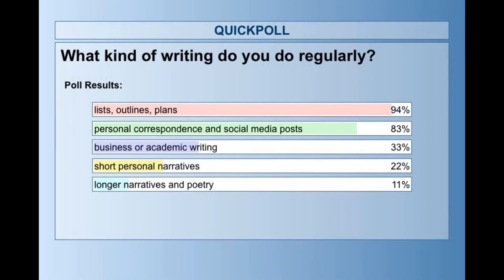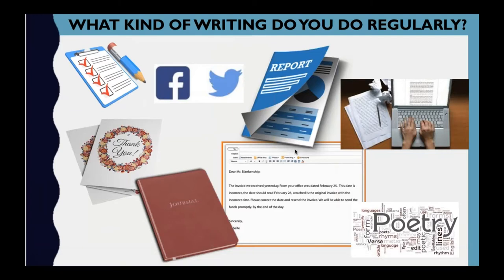We do want to give our learners an opportunity to express themselves, but we want to make sure we're providing support for the areas where they'll be doing the most writing. Listing, outlining, and planning is a huge part of writing effectively. So if we help our learners with that kind of writing, we're going to help them with all the other elements below.